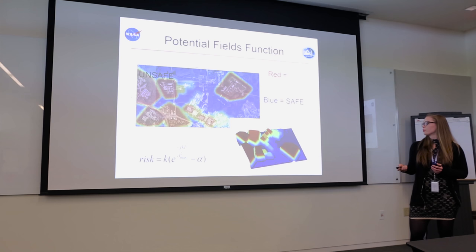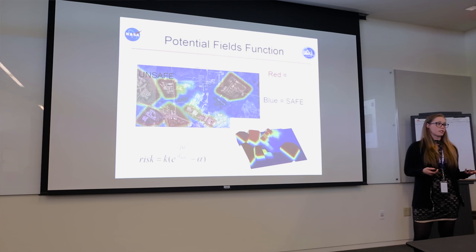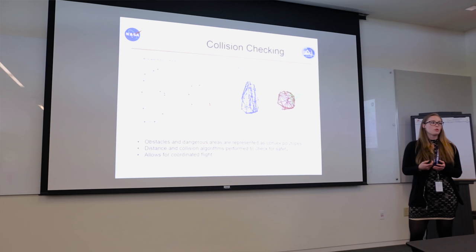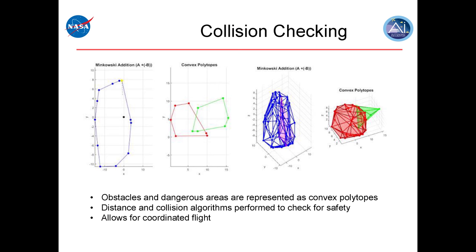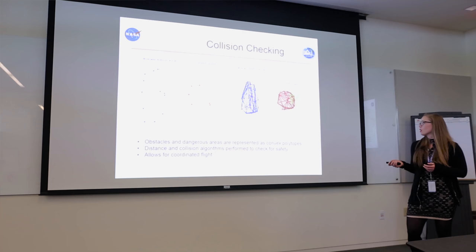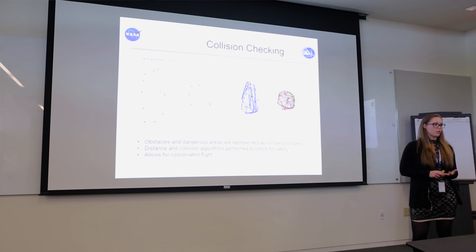This is the 2D projected map over Langley overlaid with the MATLAB output, where risk is represented in the z direction. It is also possible to calculate a 3D risk assessment with different heights representing different risk levels. Moving forward into the collision checking algorithms — which Javier will cover in more detail — obstacles and dangerous areas are represented as convex polytopes, and distance to them is calculated to check for collision using GJK algorithms and proximity queries. This also allows for coordinated flight, guaranteeing a safe flight that won't run into anything or fly over restricted areas.